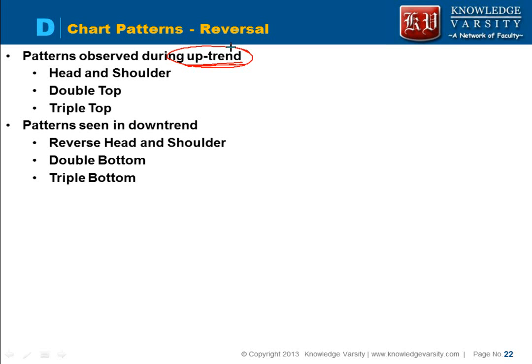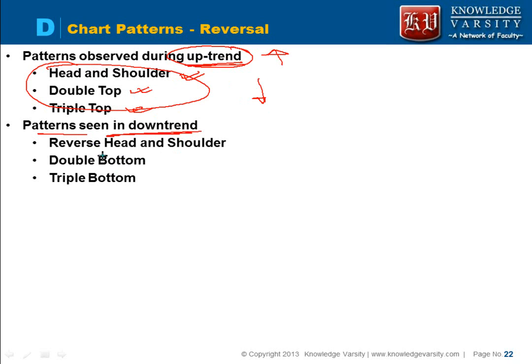There are some patterns which are observed during an uptrend — meaning the stock price is increasing. You can see head and shoulder, double top, and triple top. After seeing these patterns, the stock price will decrease. The patterns seen in a downtrend are reverse head and shoulder, double bottom, and triple bottom.